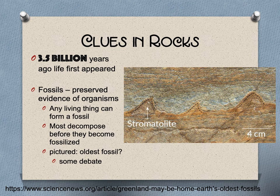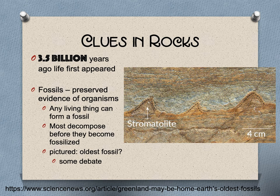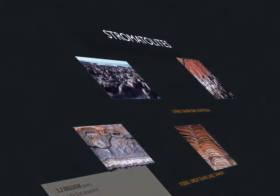The first instance of life is recorded 3.5 billion years ago, and that is our first fossil evidence of life. Any living thing can form a fossil, but most decomposed before they can fossilize. There's some debate as to whether the earliest fossil is an actual stromatolite — a sign of bacteria living — or whether it's just a chemical process like rust. However, most of the evidence suggests it is an actual stromatolite from 3.5 billion years ago.